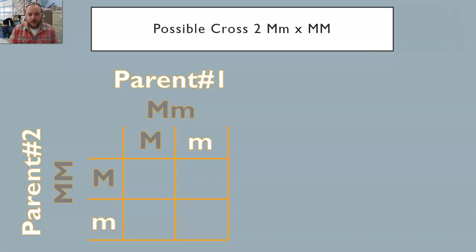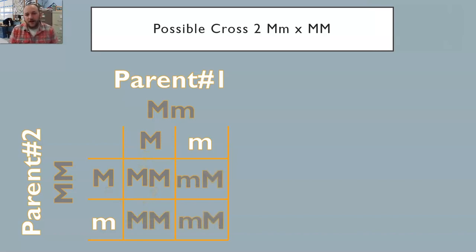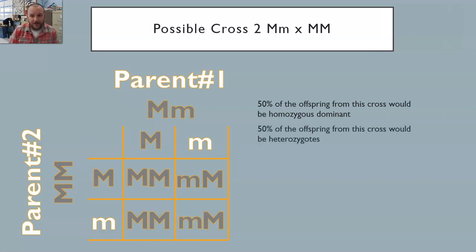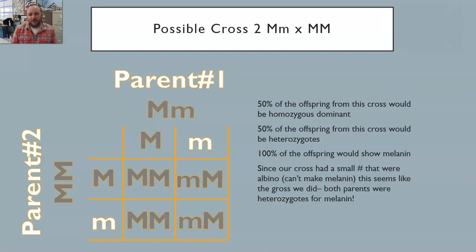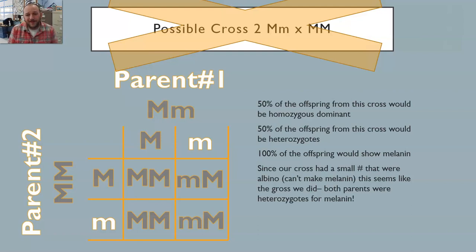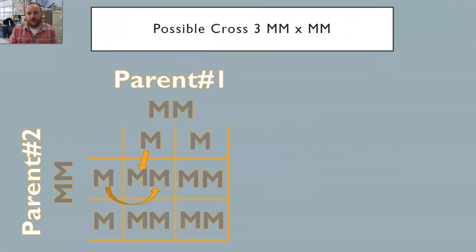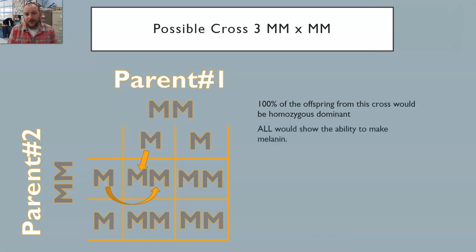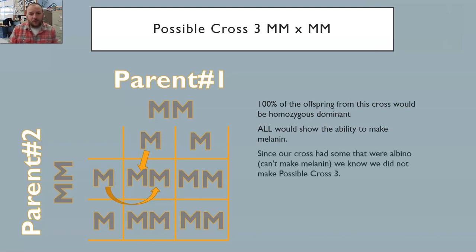So let's go through these crosses. Possible cross two has a heterozygote and a homozygous dominant. When we cross these, all of the offspring produce melanin — about 50% homozygous dominant and about 50% heterozygous, but 100% show melanin. Since our cross had some axolotls that don't make melanin, we can pretty much rule out this cross. Moving on, possible cross three also has 100% of the offspring being homozygous dominant, and again all would be able to show melanin. Since some of ours didn't, we're pretty sure it wasn't possible cross three either.